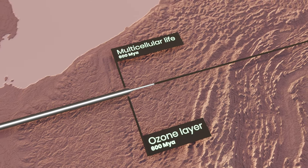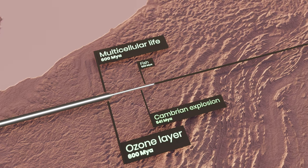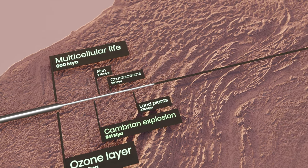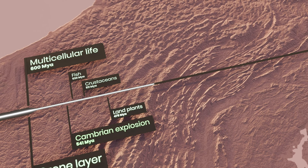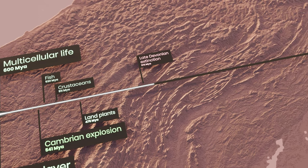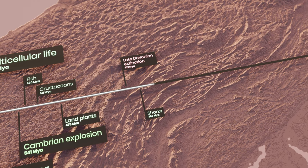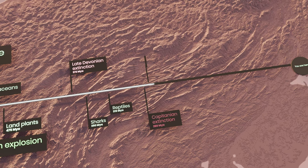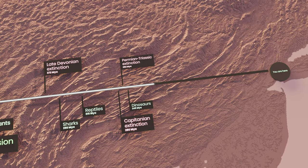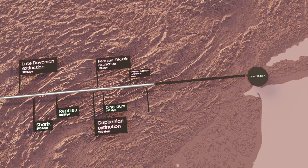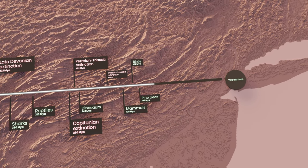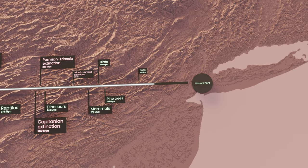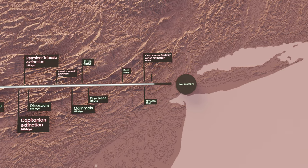At 541 million years we get the Cambrian explosion, a massive expansion of biodiversity. Many kinds of life forms familiar to us today emerge at this time, including fish, crustaceans and land plants. We also get a variety of global mass extinction events appearing in the geological record, such as the late Devonian mass extinction at 372 million years ago. Life survives and rebounds though. At around 250 million years ago we get the first dinosaurs, with mammals, birds and pine trees appearing sometime after that.